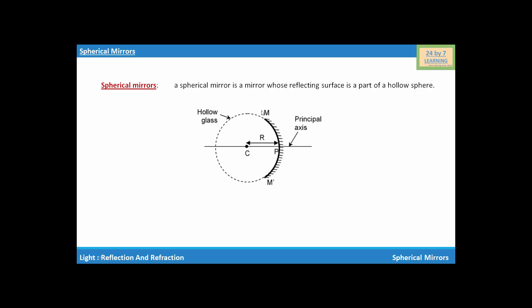This is the hollow glass and this is the principal axis, while this is the center of curvature and mm' is the reflecting surface of spherical mirror.